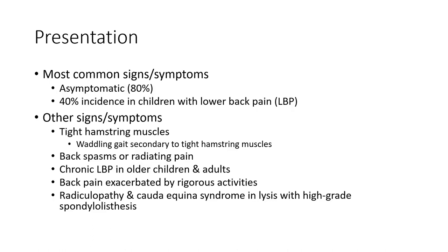Most common signs and symptoms: the condition is often asymptomatic, with about 8–40% incidence in children with low back pain. Other signs and symptoms include tight hamstring muscles, gait abnormality secondary to tight hamstrings, back spasm or radiating pain, and chronic low back pain in older children and adults. Back pain is exacerbated by rigorous activity.